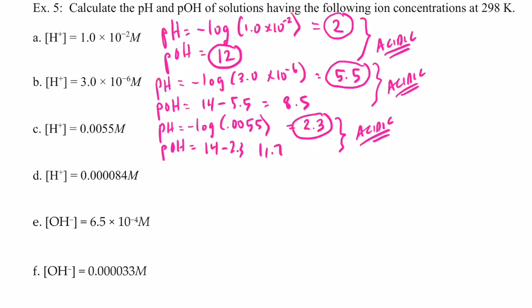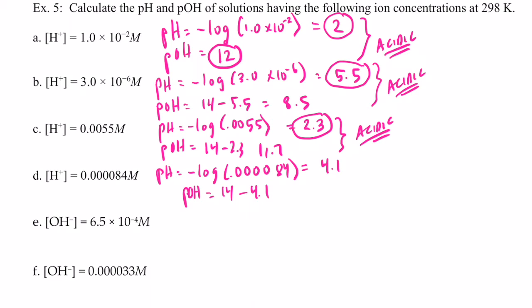Okay, the next one. Find the pH — that would be the negative log of 0.0000084. Let's calculate that: and that turns out to be 4.1. So the pOH would be 14 minus 4.1, and so we end up with 9.9 for the pOH. Once again, the pH is less than 7, so we have another solution that is acidic.